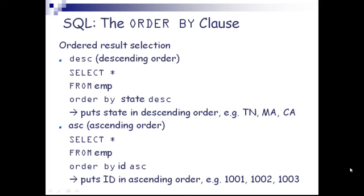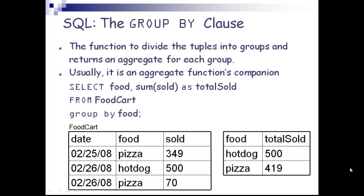The ORDER BY clause provides ordered result selection and can be in descending or ascending order. For descending: SELECT * FROM emp ORDER BY state DESC — puts state in descending order, for example TN, MA, CA. For ascending: SELECT * FROM emp ORDER BY id ASC — puts id in ascending order, for example 1001, 1002, 1003. The GROUP BY clause divides the tuples into groups and returns an aggregate for each group. It is usually an aggregate function's companion: SELECT food, SUM(sold) AS total_sold FROM food_cart GROUP BY food.